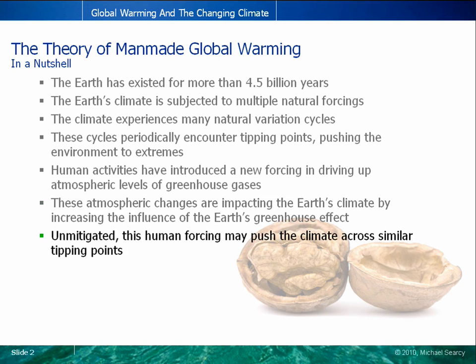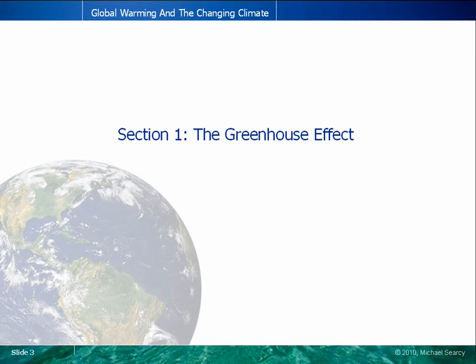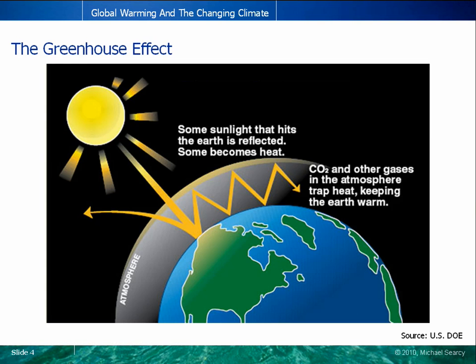Unmitigated, this new human forcing may cross one or more of the climate's tipping points, making mitigation actions irrelevant. But how important is the greenhouse effect, and specifically, how important is carbon dioxide to that effect? Light from the sun reaches the Earth and penetrates the Earth's atmosphere. Some of this light is reflected back into space, and some of it is radiated away from the Earth's surface as infrared heat. Certain gases in the atmosphere trap some of this heat near the Earth's surface, keeping the Earth temperate.